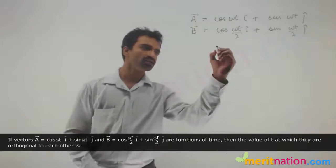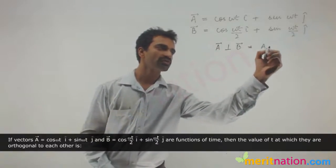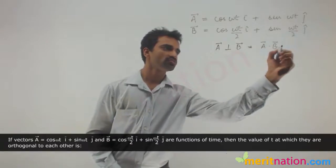Let's do that. I know that when a becomes perpendicular to b, then their dot product, a dot b, should be equal to 0.